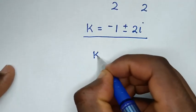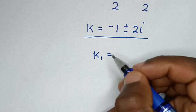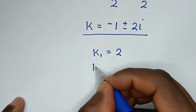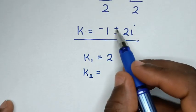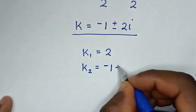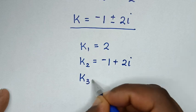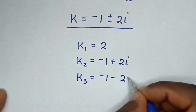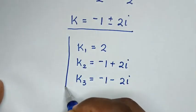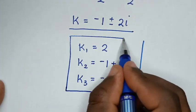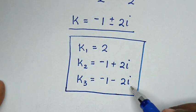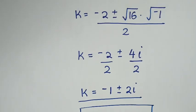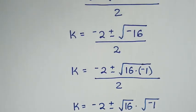Therefore, the first value of k equals 2, which is the real solution. The second value of k is negative 1 plus 2i, and the third value of k is negative 1 minus 2i. These are all the values of k in this problem — one real solution and two complex solutions. Thank you, don't forget to subscribe to my channel, and see you in the next video. Bye bye!